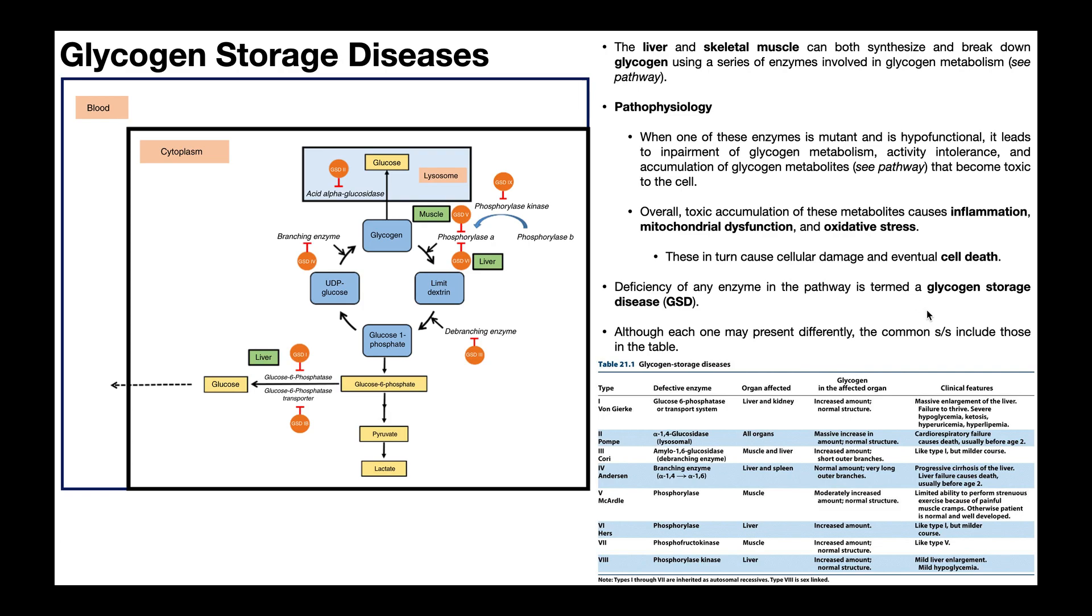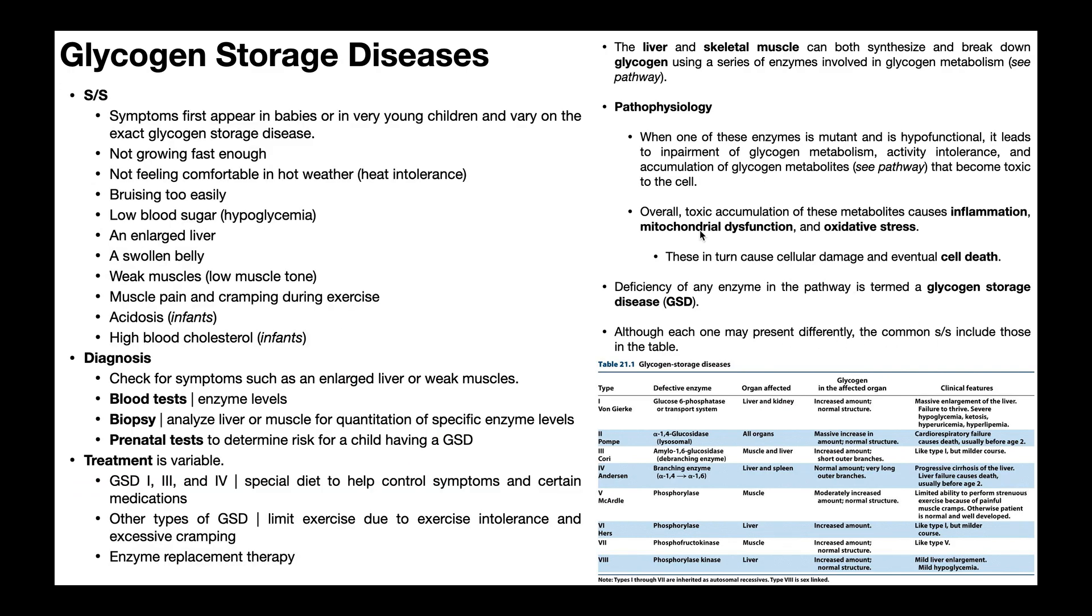This leads to, over time, what we call glycogen storage diseases, or GSDs, deficiency of any enzyme in this pathway. We'll get into the defective enzymes in a few minutes and the conditions that result from that. But understand that each of these conditions can present differently from mild all the way to severe, but they all share some common signs and symptoms.